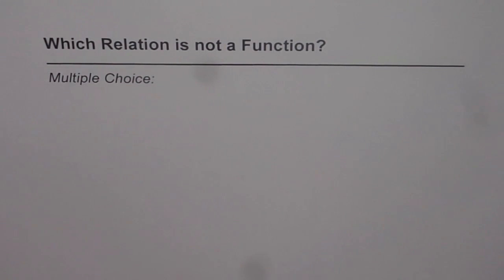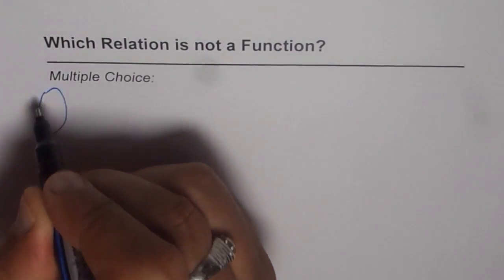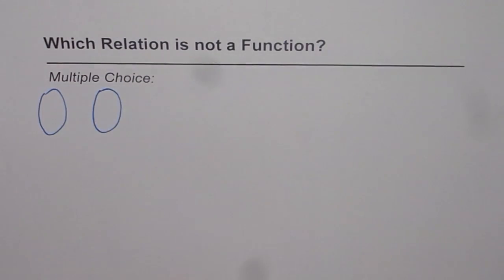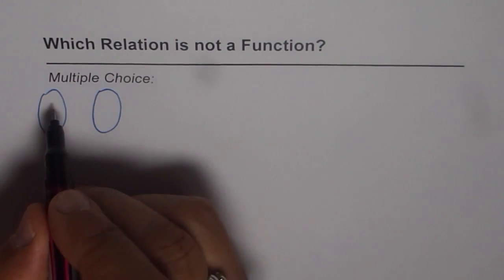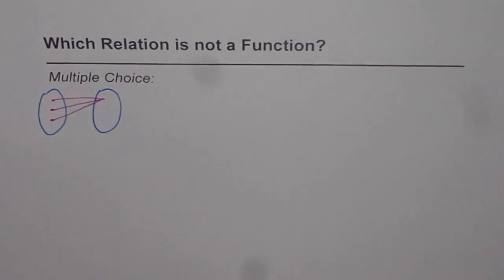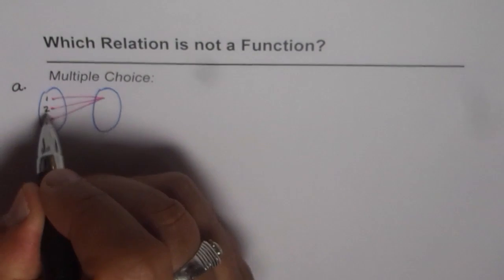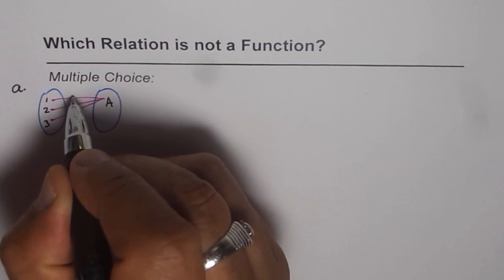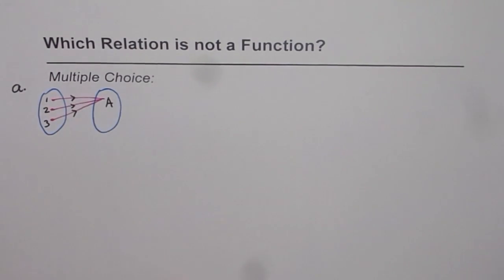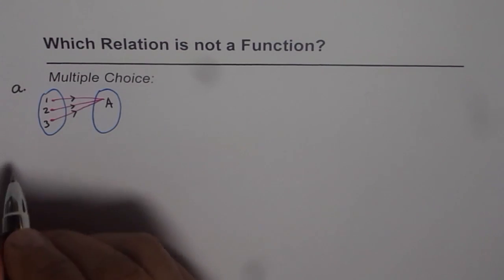Which relation is not a function? Let's have a quick review. I'll give you a few choices. Let me start with mapping diagrams — we have one set here and another set there, with some elements in each and arrows showing how they are related. Let's say this is set A with numbers 1, 2, 3, and we have arrows pointing in a direction. You have to figure out whether this relation is a function or not.